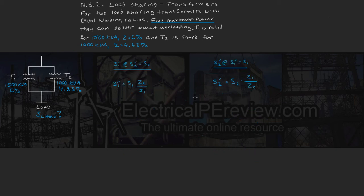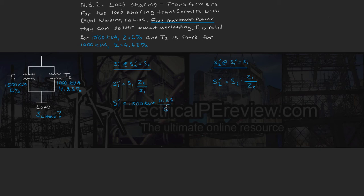Now that we've established these two relationships, we'll plug in our values to see which transformer will be operating in overload when the other is at full rated load. Starting with transformer 1's contribution: S1' equals 1500 kVA times (Z2/Z1), which is 4.83 over 6. This yields S1' equals 1207.5 kVA.